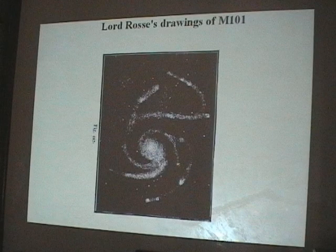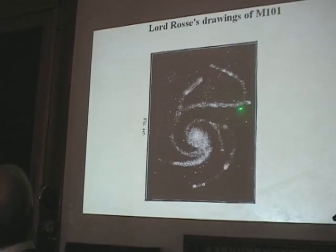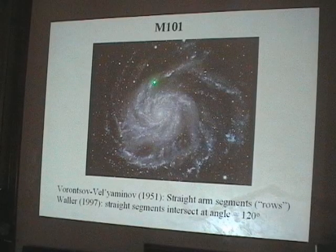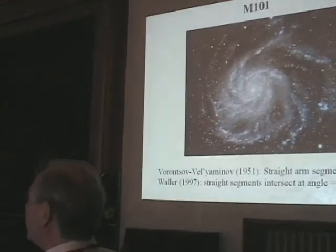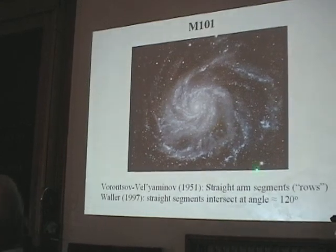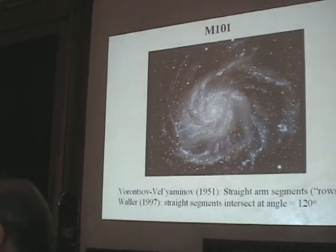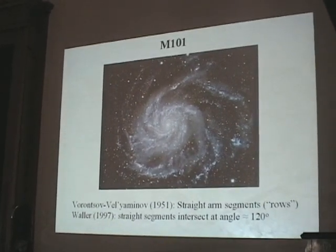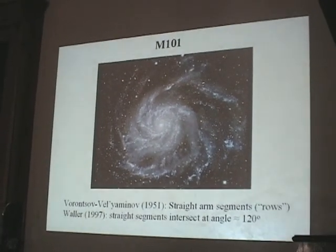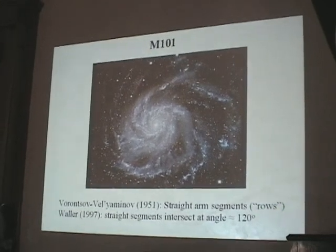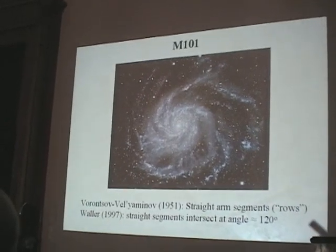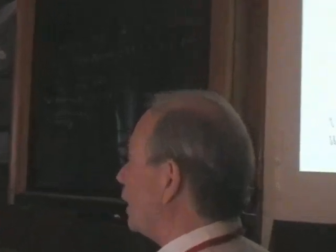These particular features in morphology are clearly seen here. The straight segments — Waller in 1997 showed that in this galaxy the segments intersect each other under the same angle of approximately 120 degrees. Before Waller, Vorontsov-Velyaminov here at Sternberg mentioned that in this galaxy straight segments, which he called 'rows', are defined as linear sequences of blue stars and star complexes.